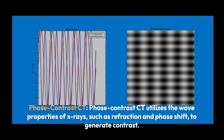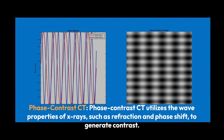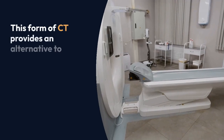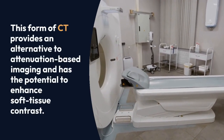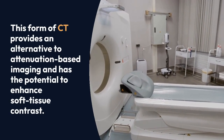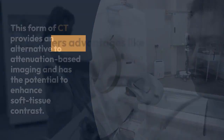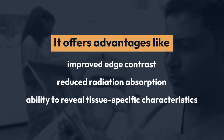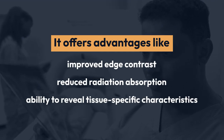Phase Contrast CT utilizes the wave properties of X-rays, such as refraction and phase shift, to generate contrast. This form of CT provides an alternative to attenuation-based imaging and has the potential to enhance soft tissue contrast. It offers advantages like improved edge contrast, reduced radiation absorption, and the ability to reveal tissue-specific characteristics.